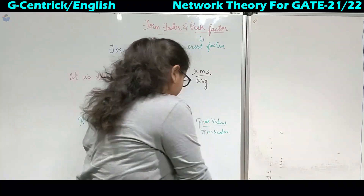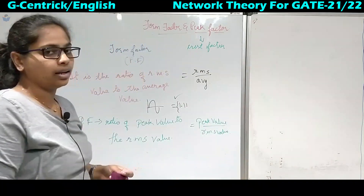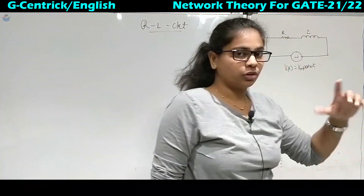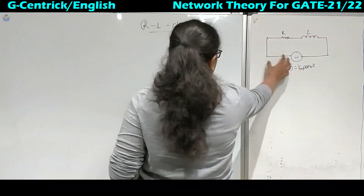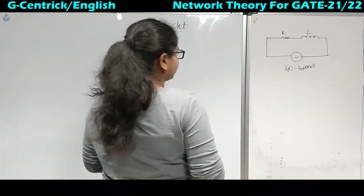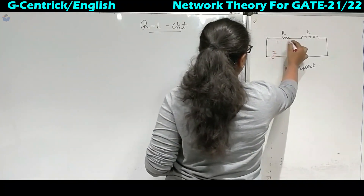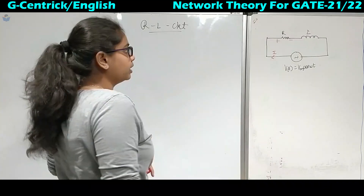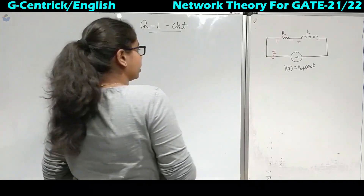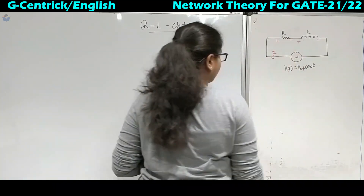Next we will see the phasor diagram of the R and L series circuit, the RL circuit. We have taken the combination of R and L in series connection, with an AC voltage source of value Vm cos(ωt). This implies there will be a current I flowing through it. When current I flows in the series circuit, it is the same throughout, but there will be voltage drops across R and L.